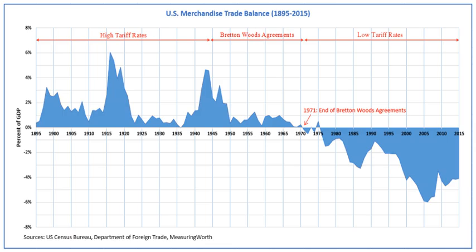The Bretton Woods System was the first example of a fully negotiated monetary order intended to govern monetary relations among independent states. Its chief features were an obligation for each country to adopt a monetary policy that maintained its external exchange rates within 1% by tying its currency to gold, and the ability of the IMF to bridge temporary imbalances of payments. There was also a need to address the lack of cooperation among other countries and to prevent competitive devaluation of currencies.